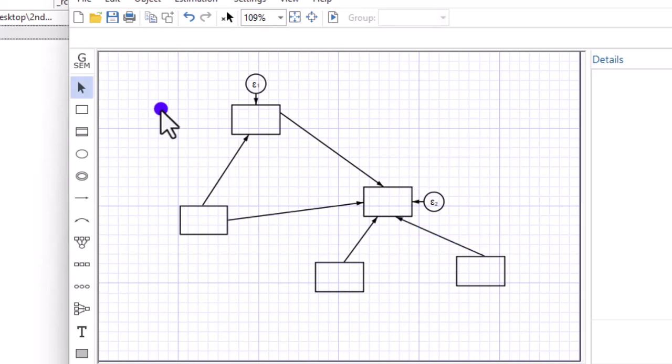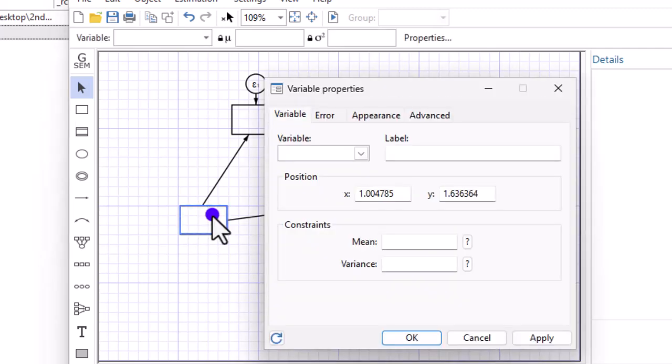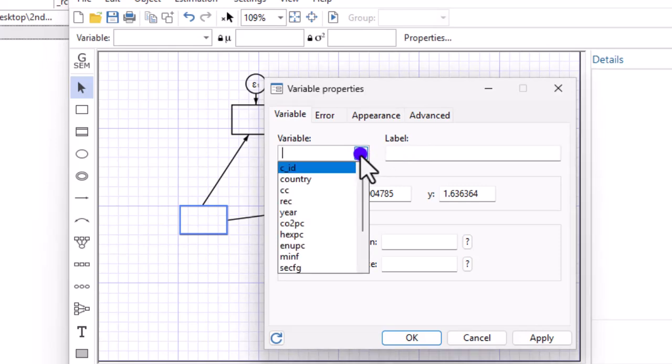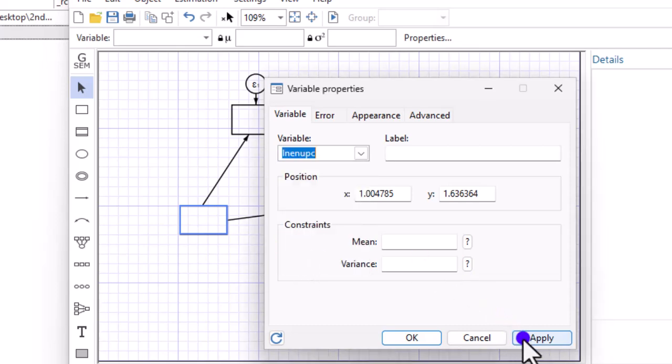So now it's time for me to label the boxes with the variable names. So let me start with this. Make sure after you have created your paths, come back and click the select icon. Then start naming your variables in the boxes. Let me start with this. So right here, I double click. Then from here, I can just select the variable or just type out the name. So this will be energy use per capita. That's it. And I click apply. That's it. Or I can click okay, which is fine.